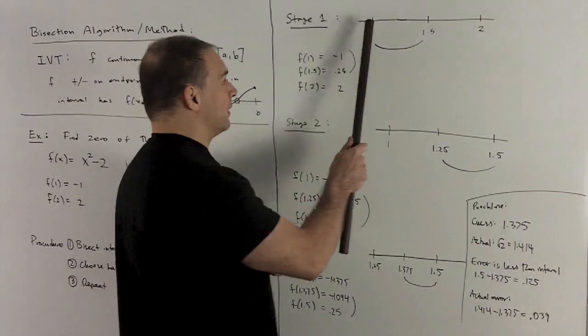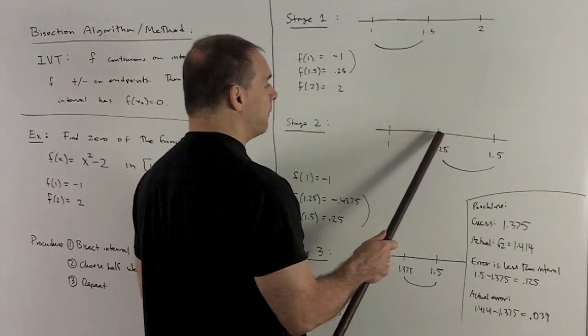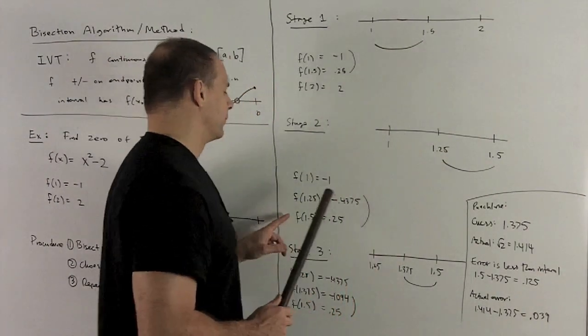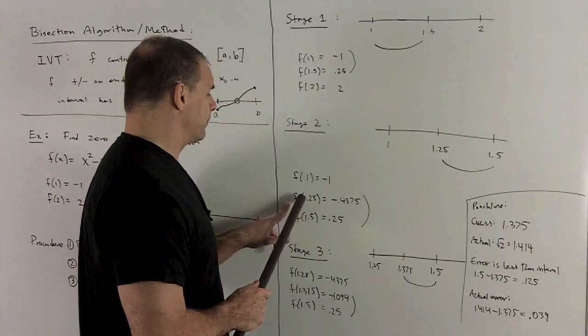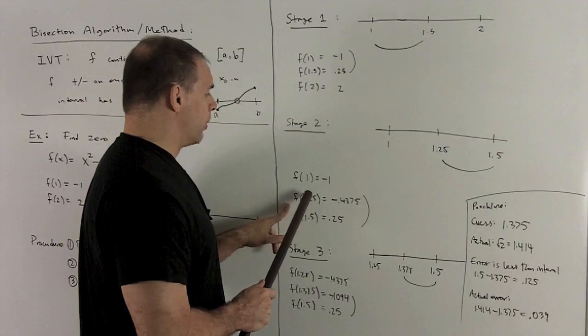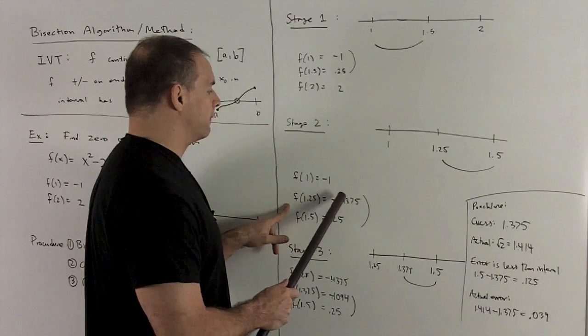Stage 2, we're going to take this interval, split it in half, so its midpoint is going to be 1.25. We evaluate that in f. So we're going to have f(1.25) gives me -0.475.